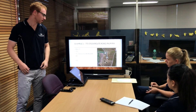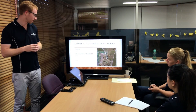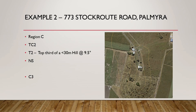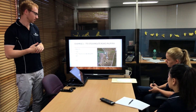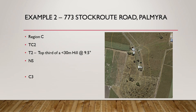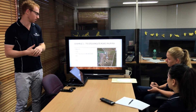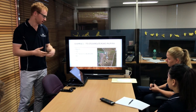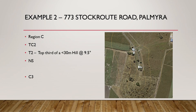We'll do another example to show how terrain category can affect the result. This site — 773 Stockroot Road, Palmyra — is in northern Queensland, so it's Region C. That terrain is essentially a cane paddock, so Terrain Cat 2. It's a pretty flat area, but this site is on the only hill around: T2, in the top third at the top of a 30-meter hill at nine-and-a-half degrees. And clearly no shielding can be applied. Going through all that gives you C3.